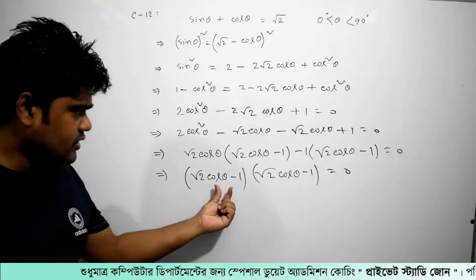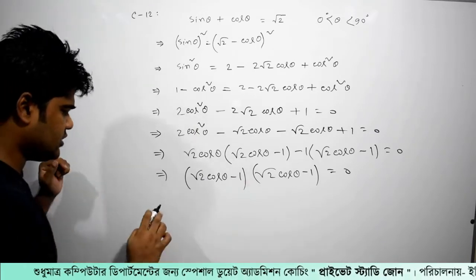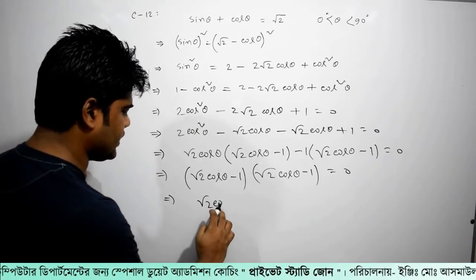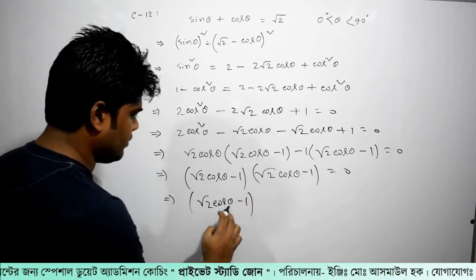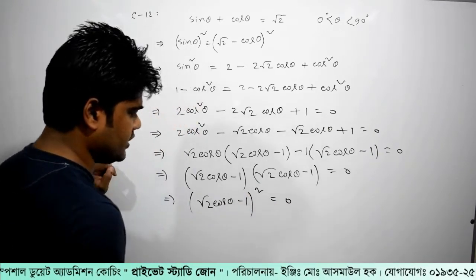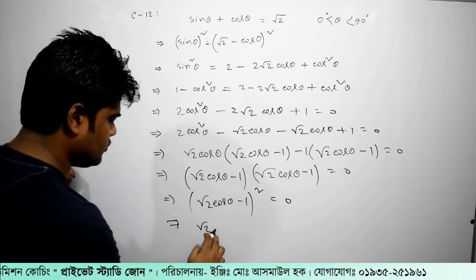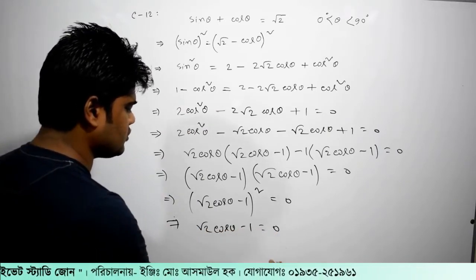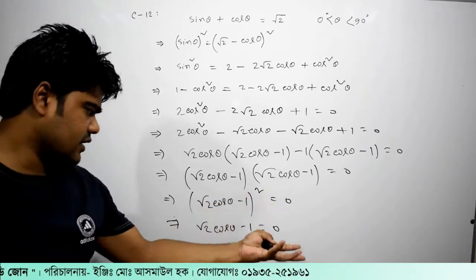But if you look at this, it is the same. I am going to write this: cos theta minus 1, whole square equals 0. Then write the line. √2 cosθ minus 1 is equal to 0. Let me define that.